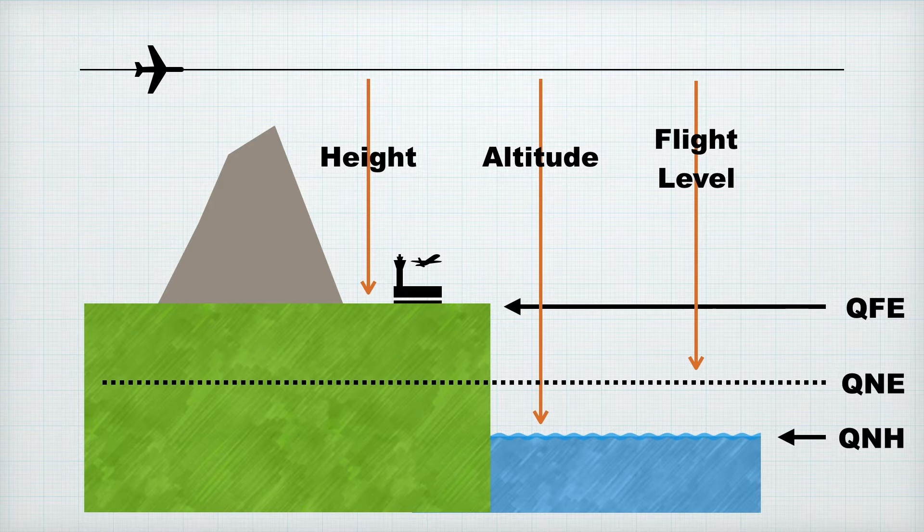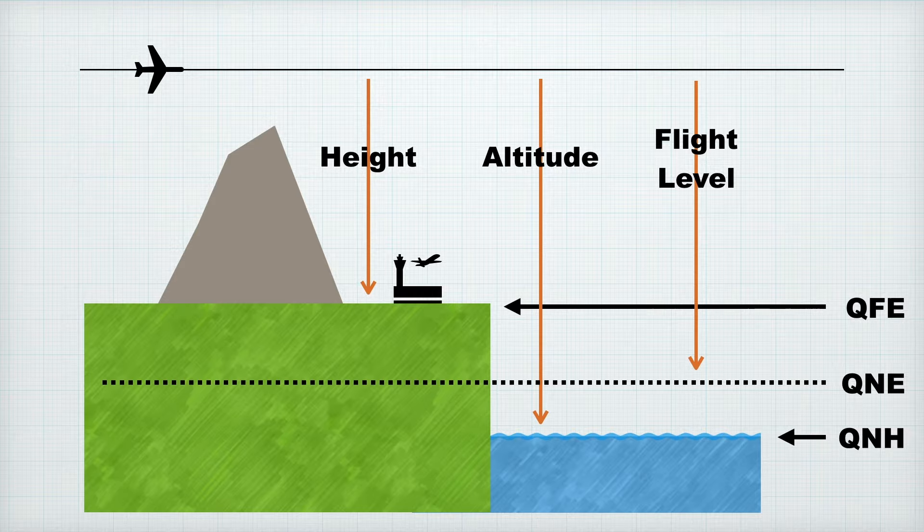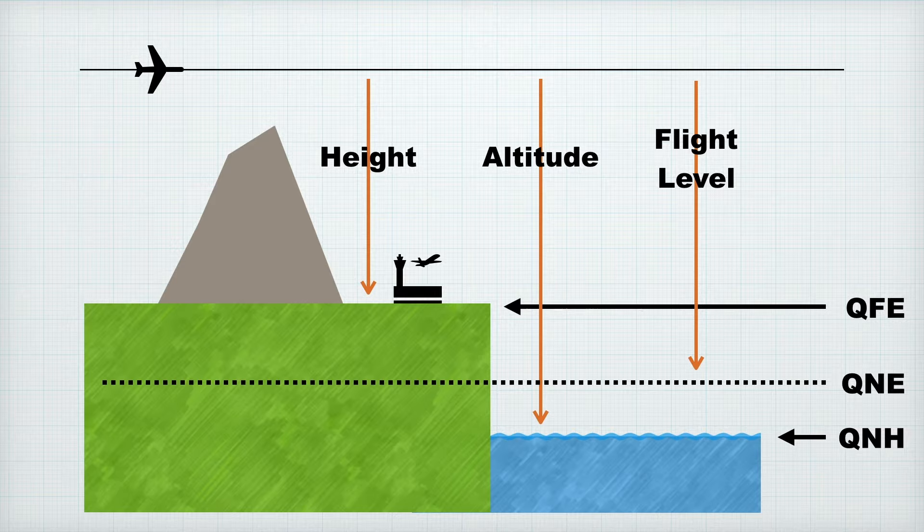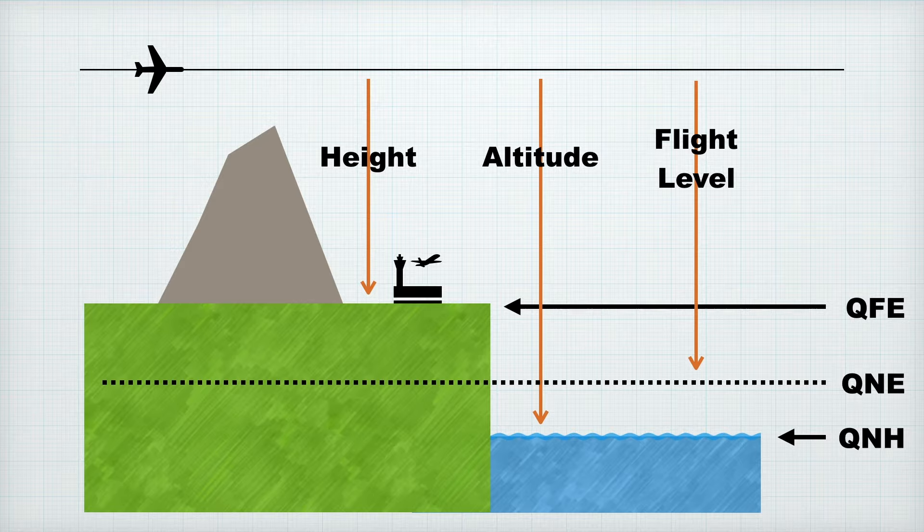I want to show you the image I referred to a lot in the previous video. This gives a decent summary of the different reference pressure settings and the types of height reporting we can get. Also, you may remember that the location of the 1013 datum, QNE, changes depending on the QNH, and that we need to take this into account to maintain things like terrain avoidance.